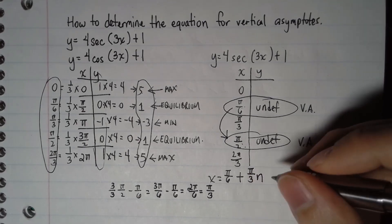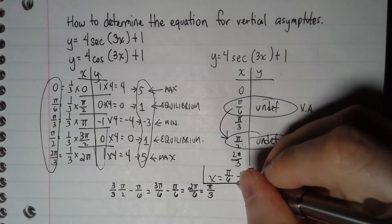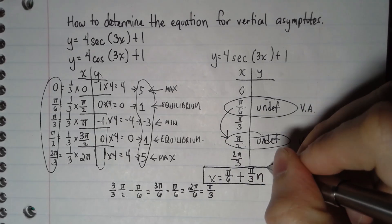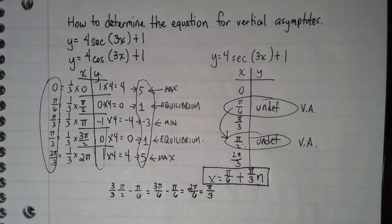And all you have to do is put an n at the end, and here is your equation for vertical asymptotes.